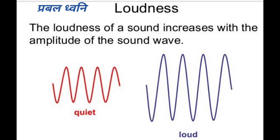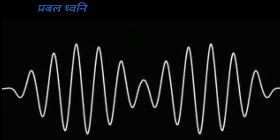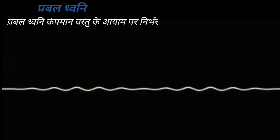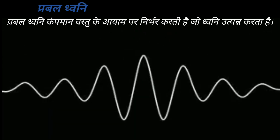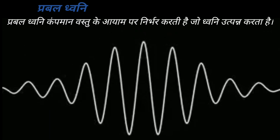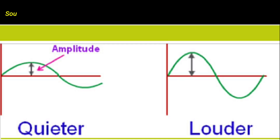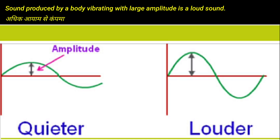The next characteristic of sound is loudness (prabal dhvani). Loudness of a sound depends on the amplitude of the vibrating body producing the sound. Prabal dhvani kampaman vashtu ke ayam par nirbhar karti hai joh dhvani utpanna karta hai. A sound produced by a body vibrating with a large amplitude is a loud sound. Adhik ayam se kampaman vashtu dwara utpanna dhvani prabal dhvani kehlati hai.